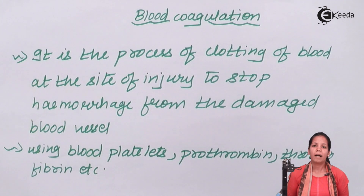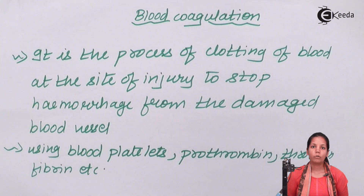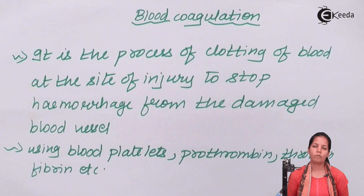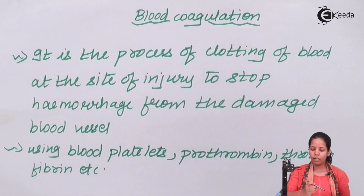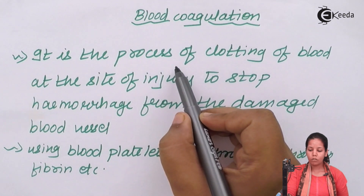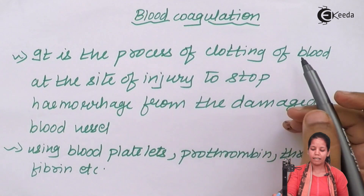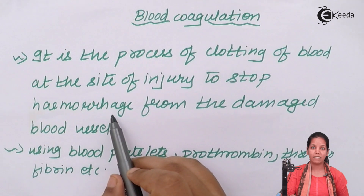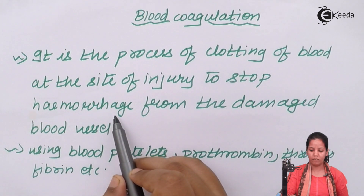Your clotting factors are many; there's a cascade of clotting factors present, which include blood platelets, prothrombinase, thrombin, fibrinogen, fibrin, and finally the formation of a clot or thrombus. The process of clotting of blood at the site of injury, just to stop hemorrhage — that's blood loss from the damaged blood vessel — is termed as blood clotting.